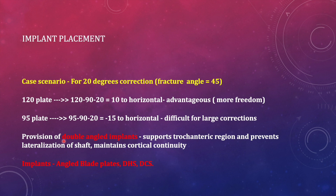The advantage of double-angle implants is that they support the trochanteric region, prevent lateralization of the shaft, and maintain cortical continuity after valgus osteotomy. We'll see what happens with single-angle devices in the coming slides. Available implants include angled blade plates, dynamic hip screw (DHS), and dynamic condylar screw (DCS) — all can be used. The key point: for large corrections, use a higher-angle device.